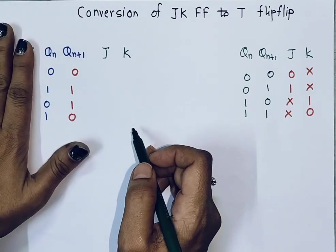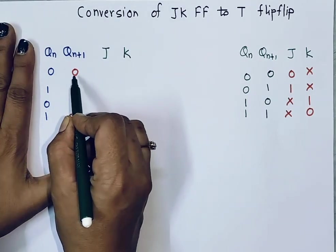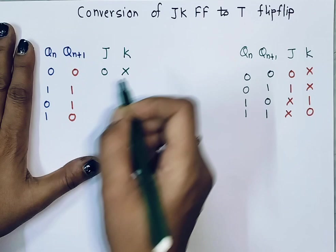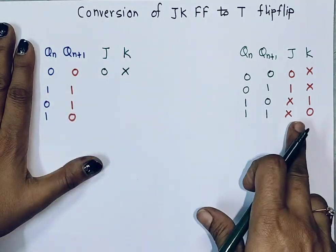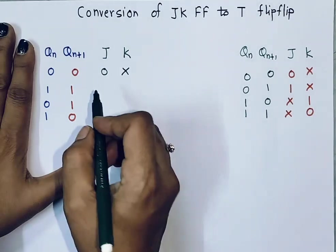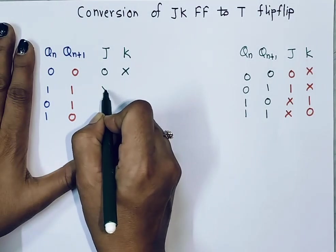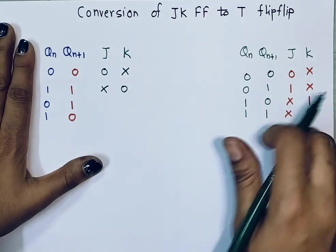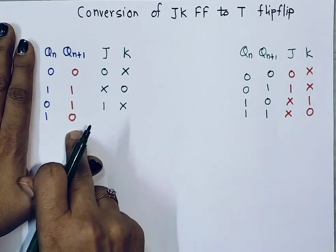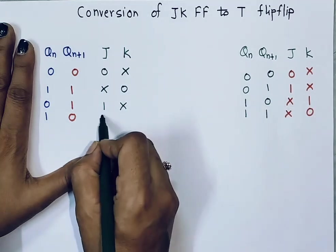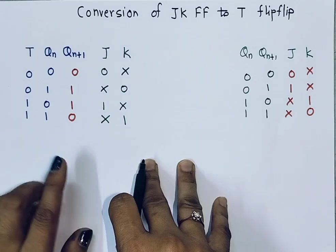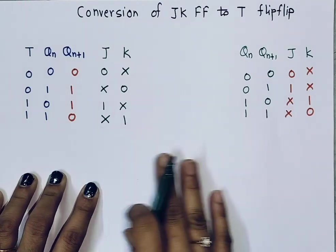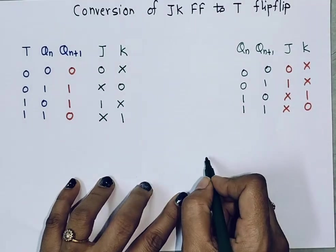Based on this excitation table, we will write values for J and K. When Qn=0 and Qn+1=0, J=0 and K=don't care; when Qn=1 and Qn+1=1, J=don't care and K=0; when Qn=0 and Qn+1=1, J=1 and K=don't care; when Qn=1 and Qn+1=0, J=don't care and K=1. Now I'll draw the diagram of the JK flip-flop.